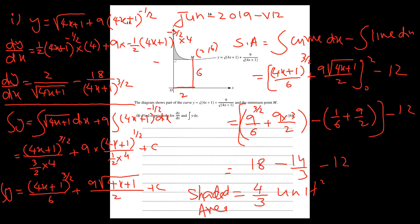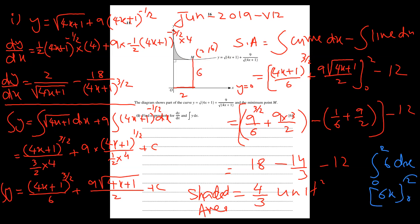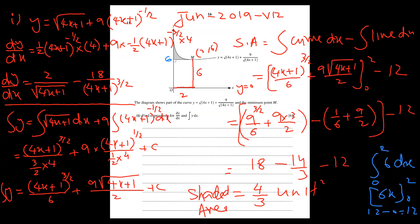To confirm: the line equation is y = 6. Integrating y=6 from 0 to 2: integral of 6 dx = 6x from 0 to 2 = 12. Same answer as the rectangle. So whether you use line integration or the rectangle, both give 12, confirming the shared area is 4/3 square units.